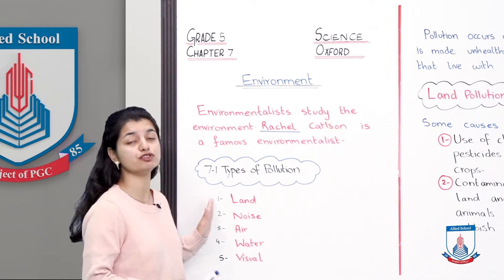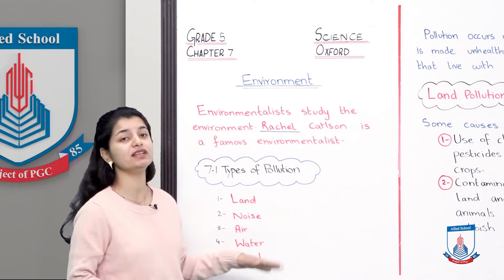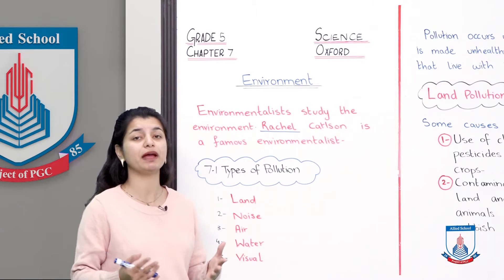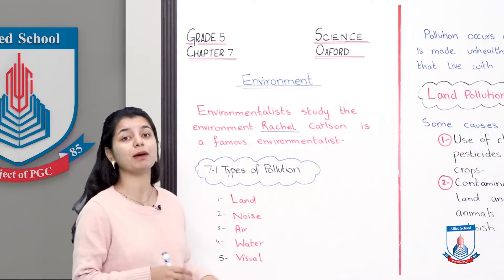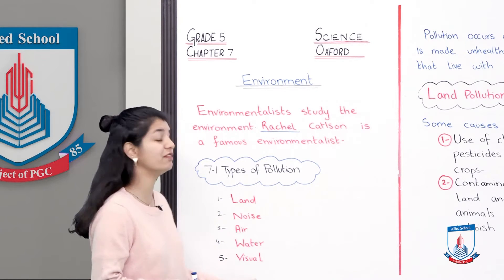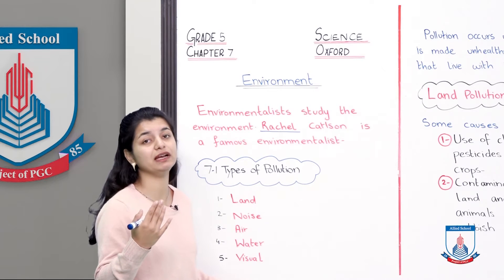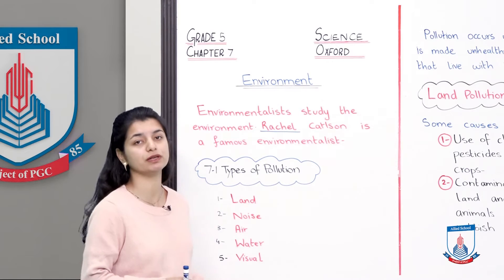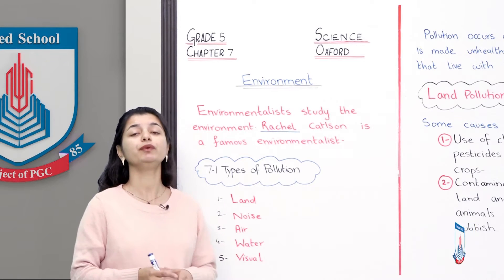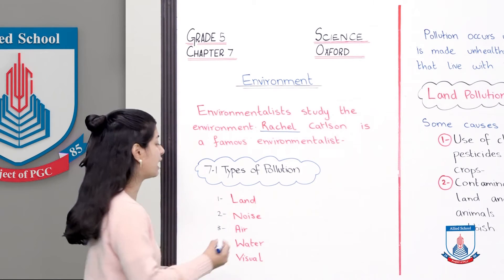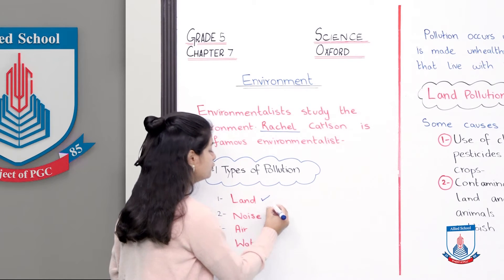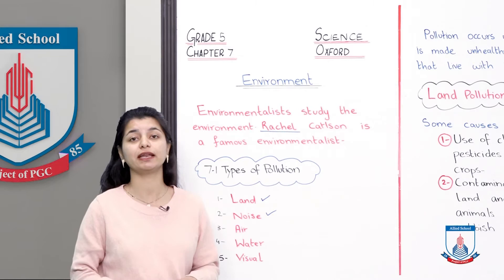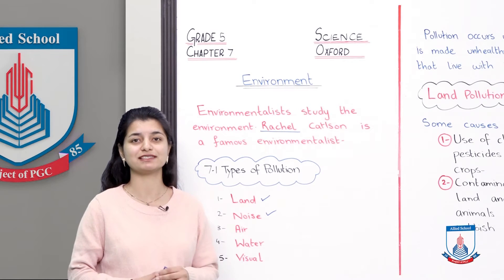Land pollution occurs on the land; noise pollution is in the form of sound; air pollution is spread in the air; water pollution is spread in water; and visual pollution affects your visibility or sight. Today we will focus on land pollution and noise pollution, and discuss their causes and impacts in detail.